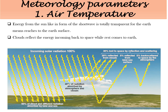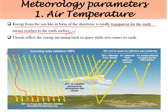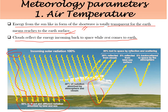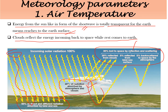Energy from the sun in the form of shortwave radiation is totally transparent for the Earth, meaning it reaches the Earth's surface for heating. About 20% of the radiation is absorbed by atmospheric clouds and the atmosphere itself. About 30% is lost to space by reflection and scattering, which is also known as planetary albedo. Albedo is the reflected amount of solar radiation divided by the incoming solar radiation, showing the reflectivity property of a particular material.